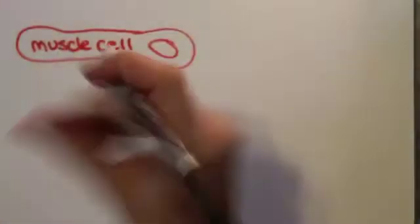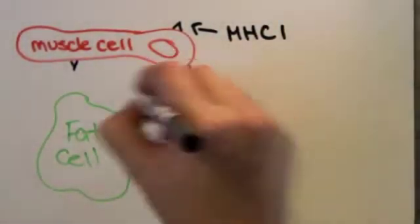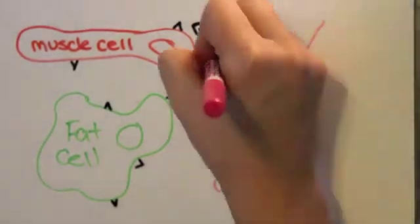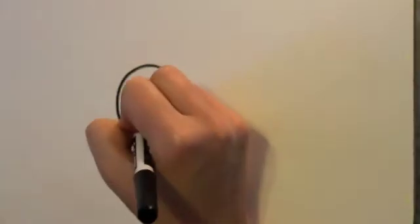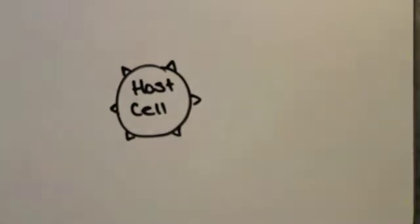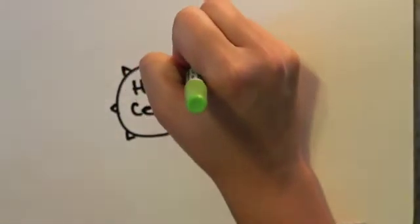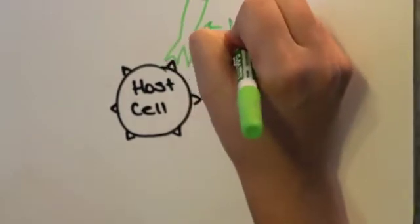Normally, when the MHC1 receptor displays self, this prevents host cells from being attacked due to the body's natural self-tolerance. However, in the hypersensitivity type 2 response, the host cells still present self but the normal recognition system fails and the host cells are viewed as foreign and attacked by the antibodies known as autoantibodies.